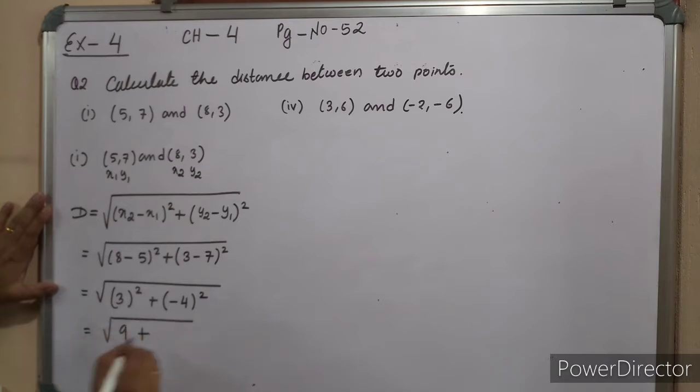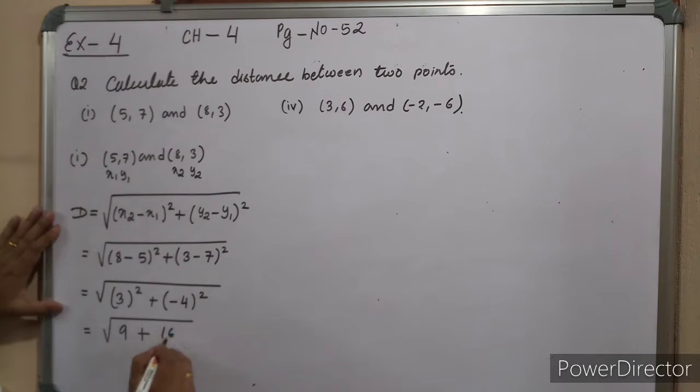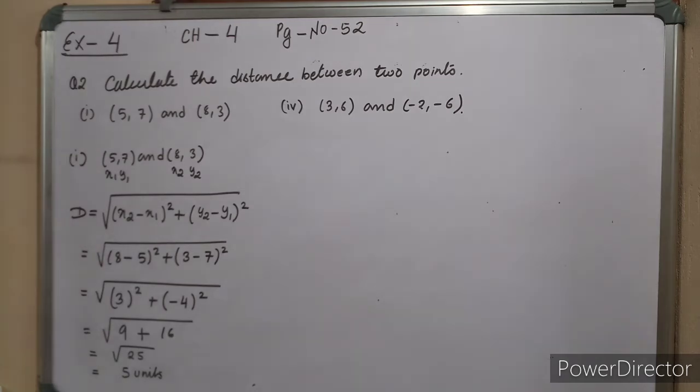So we have 3 whole square plus minus 4 whole square. 3 squared is 9, plus 4 squared is 16 (minus squared becomes plus). 9 plus 16 equals 25, and the square root of 25 is 5. The distance is 5 units.